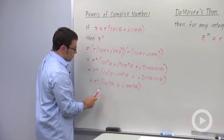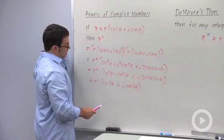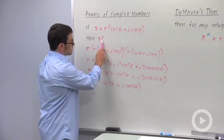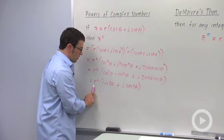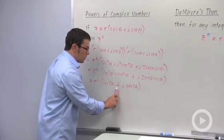So what I have here is the square of z. To square z, all I have to do is square the modulus and double the angle.